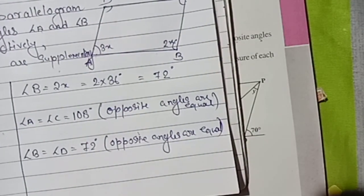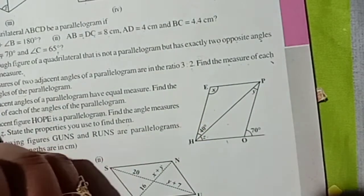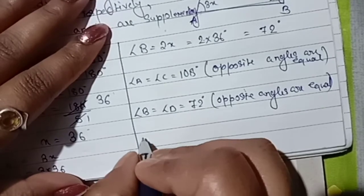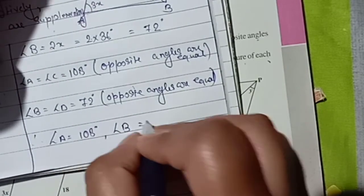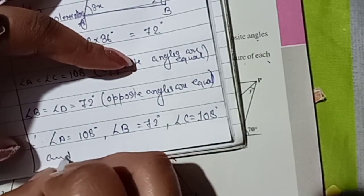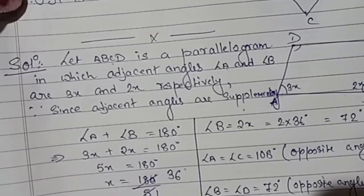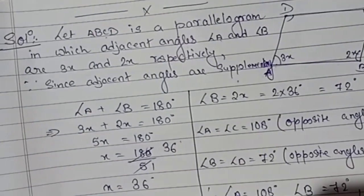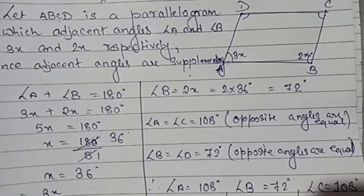So we got the value for each and every angle. Therefore: angle A equals 108 degrees, angle B equals 72 degrees, angle C equals 108 degrees, and angle D equals 72 degrees. This is your solution number 5. I hope children it is clear. Please, if there are any queries, ask. Thank you.